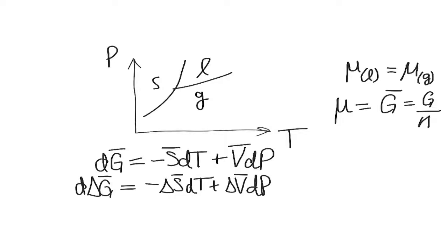Now by definition, we wrote that G molar is also the chemical potential. So this is equal to d delta mu. And this delta mu is for the phase transition. We're assuming we're going from the liquid phase to the gas phase. But we said that the chemical potential for the liquid phase and the gas phase are equal in a phase equilibrium. That means this is equal to zero.